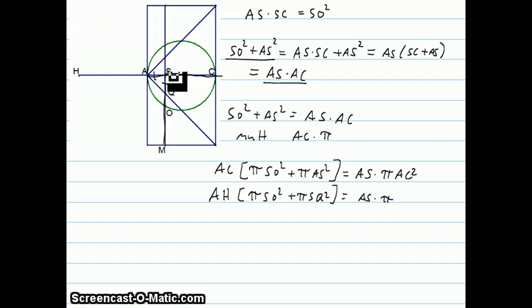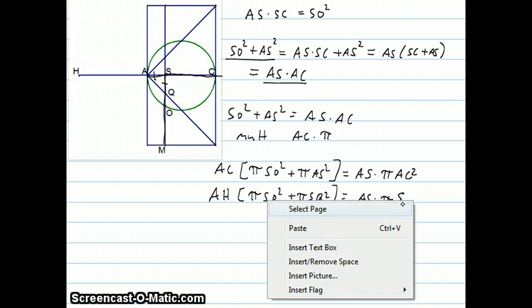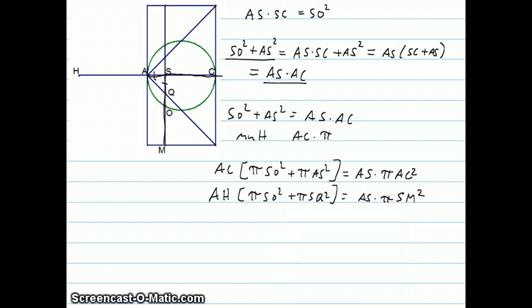And AC is part of this square and MS, no matter where M is, MS is also equal to the size of that square. So I'm going to call this SM squared. So now we've got this relationship. Now this doesn't seem like a very important relationship, but now he's going to utilize the law of the lever.